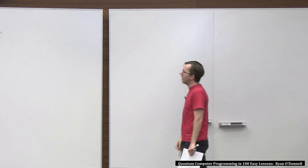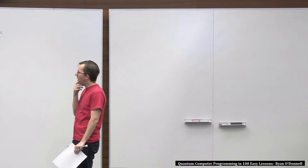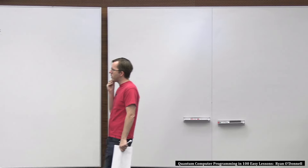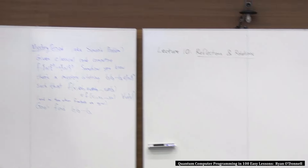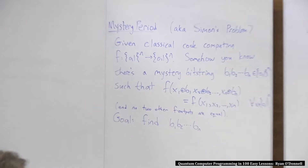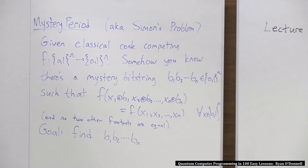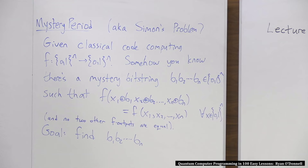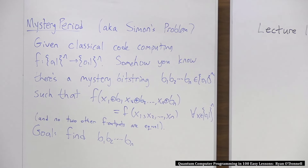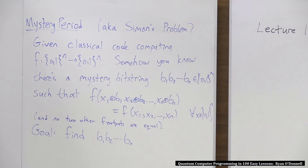Back in 1993 in Montreal, there was this guy called Dan Simon — he was a postdoc who had just gotten his PhD from the University of Toronto. He was a cryptographer, but his supervisor at Montreal was Gilles Brassard, who is kind of into quantum and was one of the first people to really get into quantum computing. Brassard told Simon to look into this quantum computing thing, and Simon looked into it and got the impression that it wasn't good for anything.